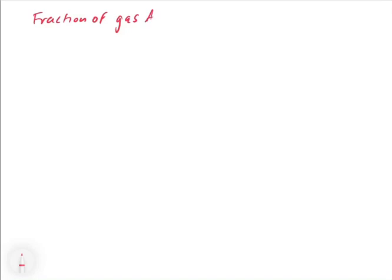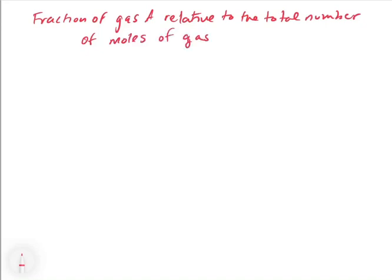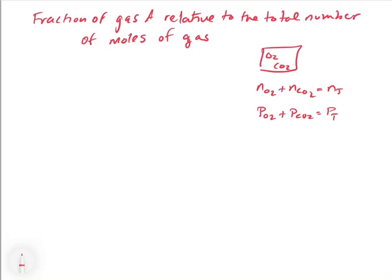Let's say we want to determine the fraction of gas A relative to the total number of moles of gas. We have a mixture of O2 and CO2. The number of moles of O2 plus the number of moles of CO2 equals the total number of moles. And the pressure of O2 plus the pressure of CO2 equals the total pressure. We know those things already from Dalton's Law. Now let's come up with what the fraction of gas A relative to the total fraction would look like, knowing that P = nRT/V.